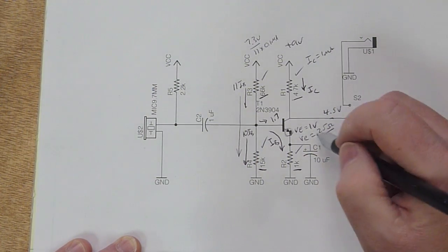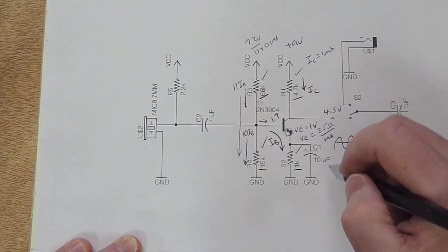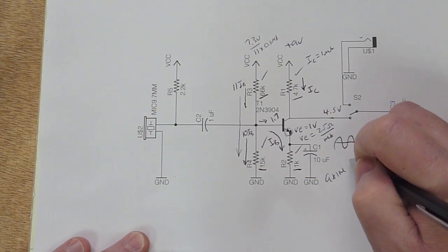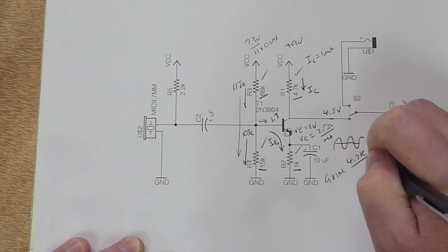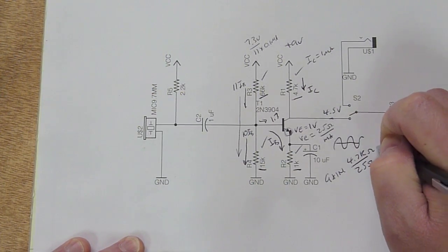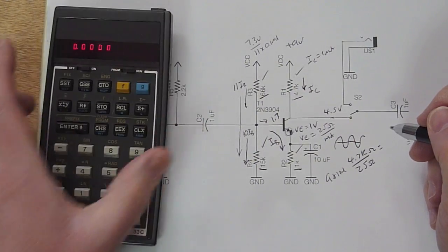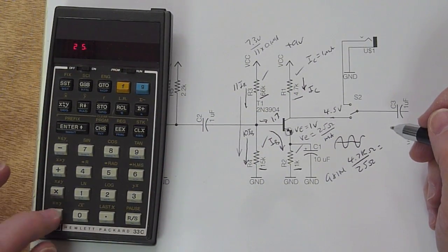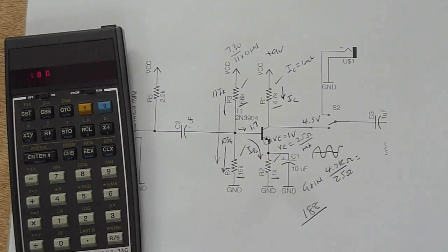So if we do that, then essentially the gain, it won't be infinite because there's a small amount of resistance in here that we neglect, and that's called RE. And it turns out RE is about 25 ohms per milliamp of collector current, and we had 1 milliamp of collector current, so this is 25 ohms. So now our gain is going to be 4.7K over 25 ohms, and that equals, we'll do the calculation, 4,725, divide, it's 180.